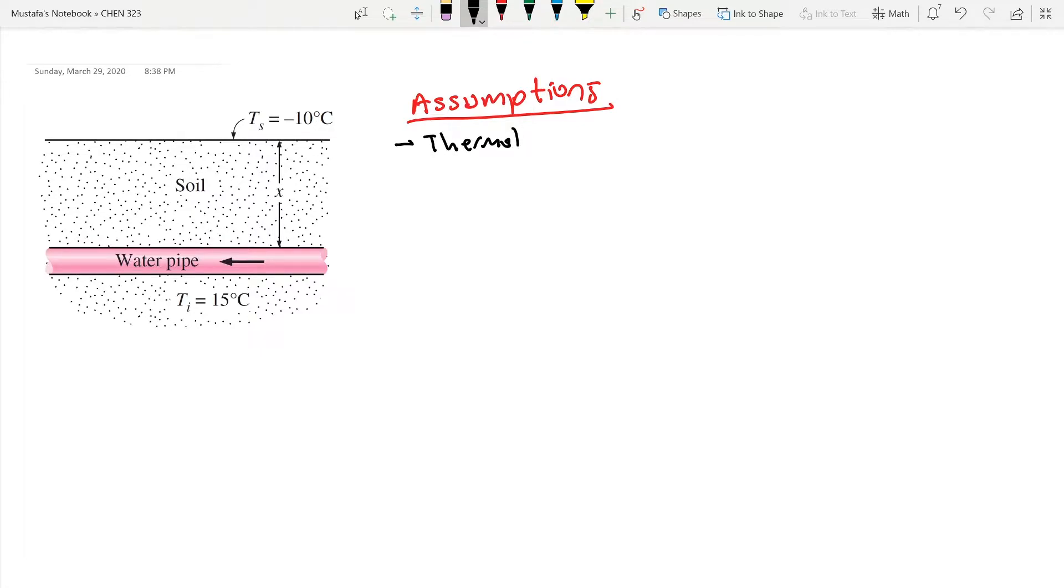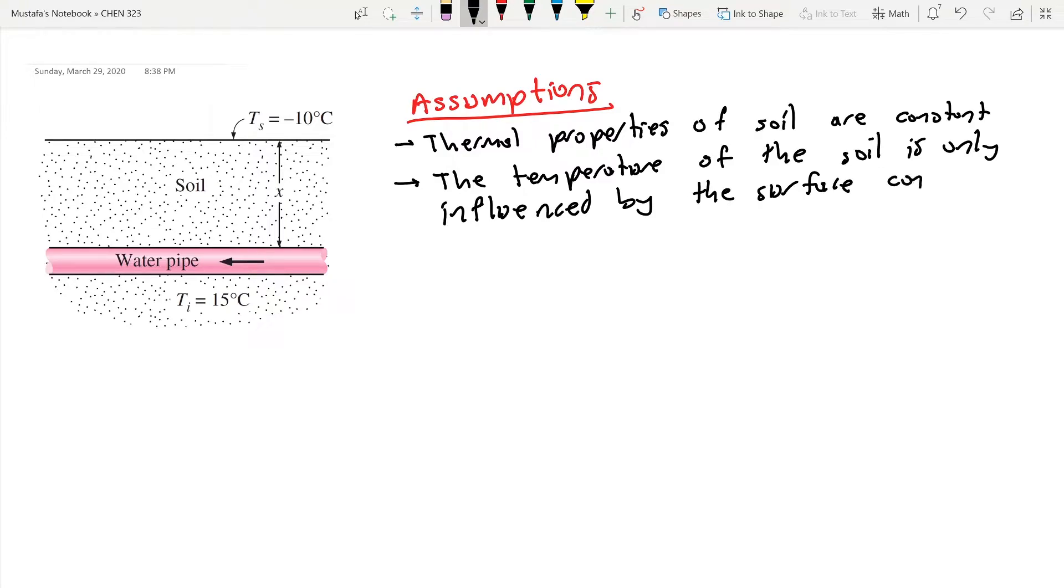Thermal properties of soil are constant. The second assumption is temperature of the soil is only influenced by the surface conditions. So that means there is no generation, nothing else, it's only influenced by the surface condition.